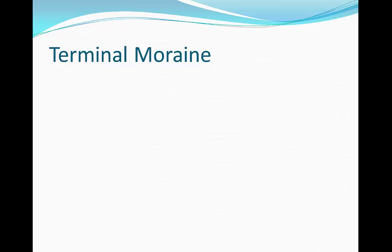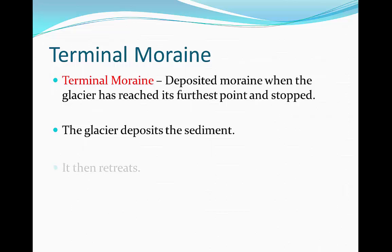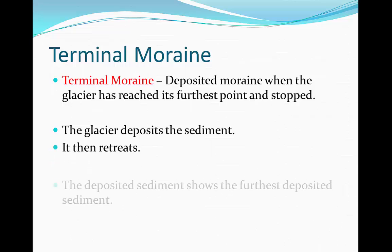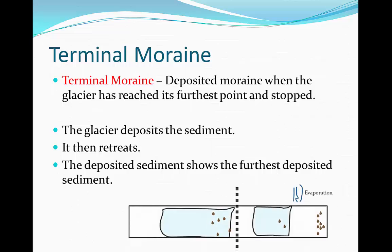Terminal moraine is moraine that's deposited when the glacier has reached its furthest point and stopped. This is when the glacier can't move forward anymore, therefore loses its energy and deposits its sediment. It can then retreat backwards.